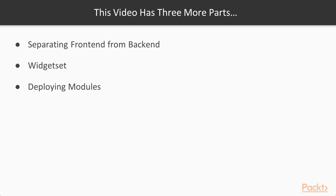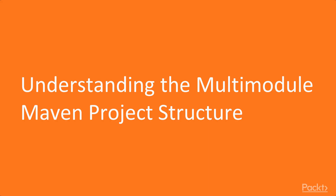After we have set up our project structure correctly, we utilize the Vaadin Maven plugin for compiling the widget set and theme related resources. Next we're going to see how different parts of Vaadin related code should be split into our project structure, so that we don't deploy unnecessary widget set compilation related code to our server. Welcome to the first video about understanding multimodule Maven project structure. In this video we will establish a new Maven project consisting of various submodules, out of which everyone has a clear role and purpose.